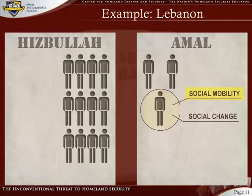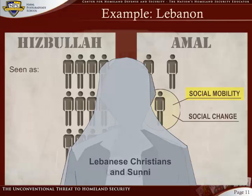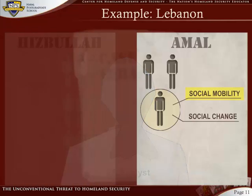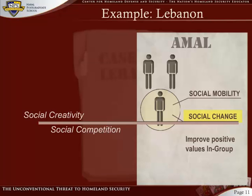The way in which these groups are viewed may change without the in-group seeing that movement. For instance, Lebanese Christians and Sunni populations may no longer consider Hezbollah as simply a Shia militia to be feared — they may also see them as part of the government, as defenders against Israeli invasion, and as providers of social services. Meanwhile, observers from the U.S. continued to focus on their identity as opposition, unable to see that ascribed identity transfer. When social mobility is not permissible or desirable, the alternative response is social change: a proactive collective effort to improve the positive values and emotions associated within the in-group. Social change can be brought about through social creativity, social competition, or both.